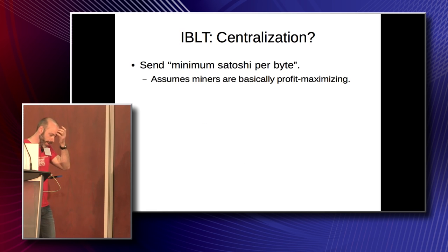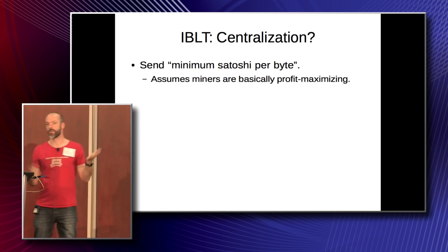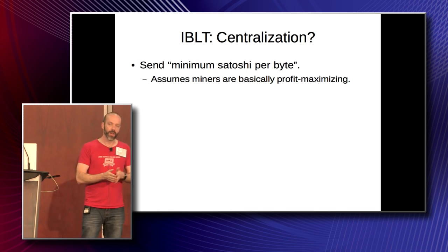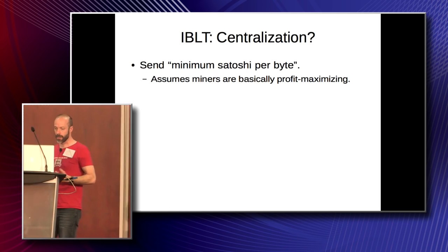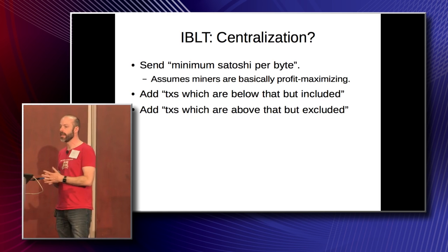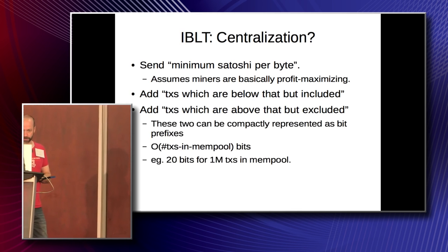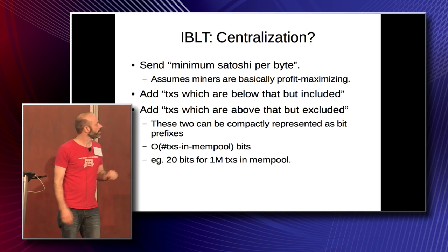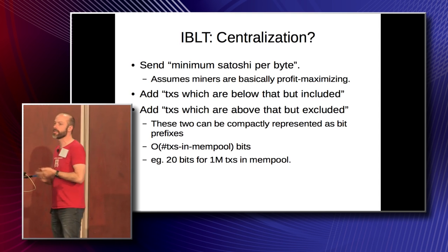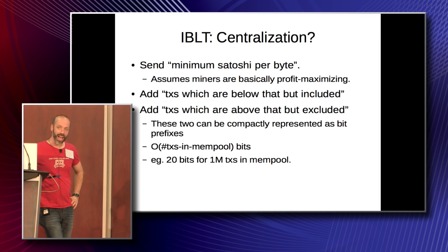So this is kind of what we came up with. You first send your minimum satoshi per byte — or satoshi per kilobyte or per 4K, whatever scale is best. This assumes miners are basically profit maximizing, so they've picked some level: if it pays more than this, I'll include it in my block. Then you say here are the transactions that were actually below that line but I included them anyway — that's your priority area. And here are transactions which were above that line in my mempool but I did not include them for some reason. Importantly, you don't have to send the TX IDs for that. Those two can compactly be represented as bit prefixes. Even if you have a million transactions in your mempool, it's still only costs you 20 bits for each of those. So sending those excluded and included TXs is actually pretty cheap.